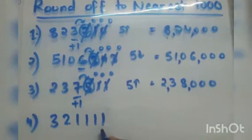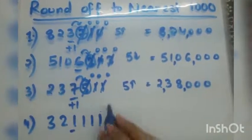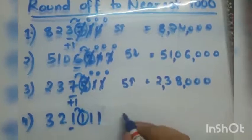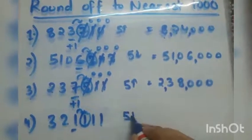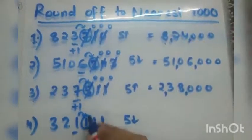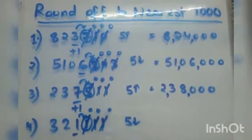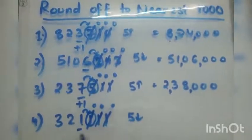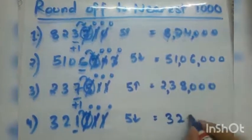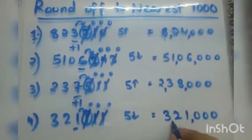Now let's see the last example. The digit in the thousands place is 1. To the right of 1 is again 1. Since 1 is less than 5, it will be round down. The digits after the thousands place all become zero, and in round down there is no change to the thousands digit. So the answer is 3,21,000.